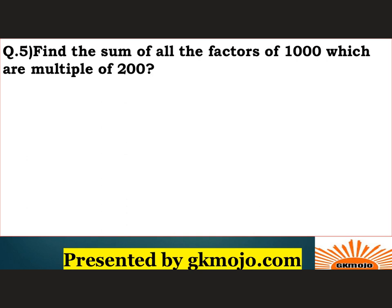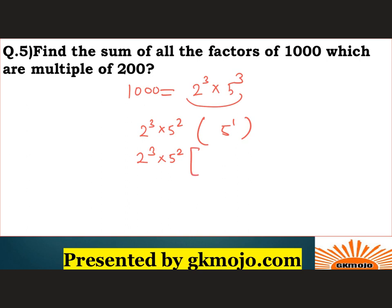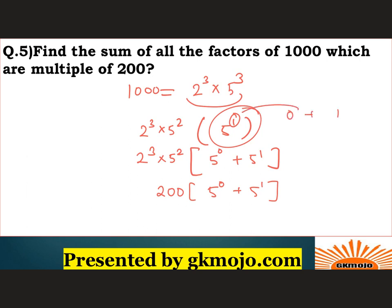Next question: find the sum of all factors of 1000 which are multiples of 200. Prime factorization of 1000 = 2^3 × 5^3. Factor out 200 = 2^3 × 5^2, leaving 5^1 inside. So the multiples of 200 that are factors of 1000 are 200 × 5^0 and 200 × 5^1. Sum = 200 × (1 + 5) = 200 + 1000 = 1200.